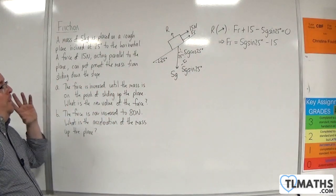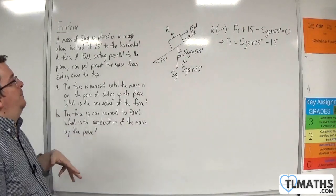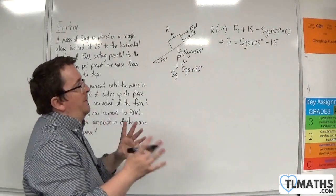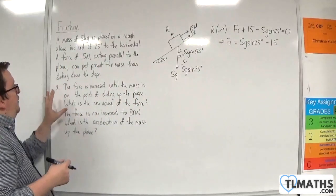Okay, so assuming that the friction remains constant throughout this problem, which, because on the point of slipping, that's the maximum friction that will be applied, we now move on to part A.